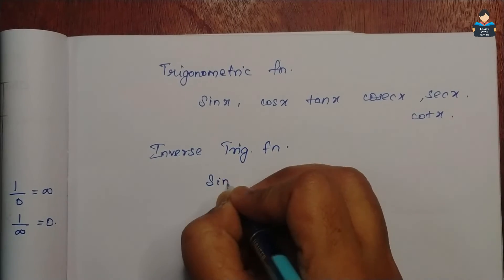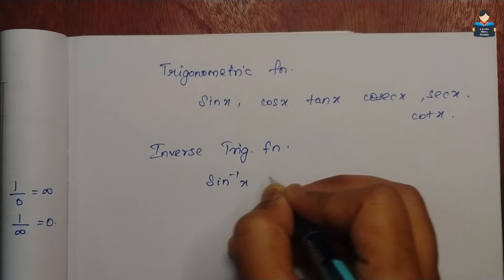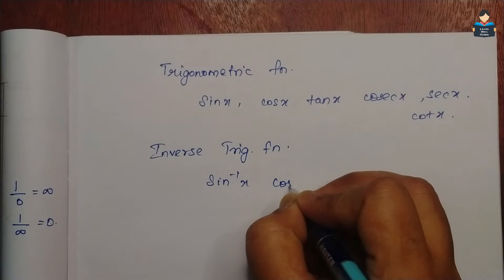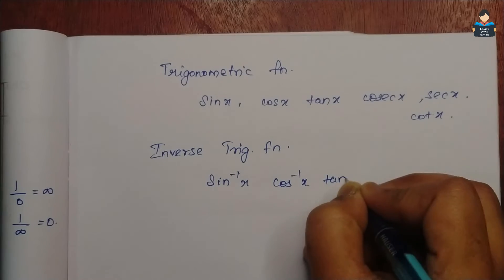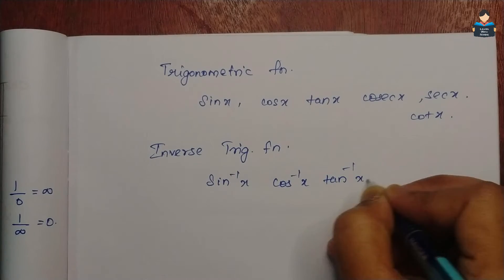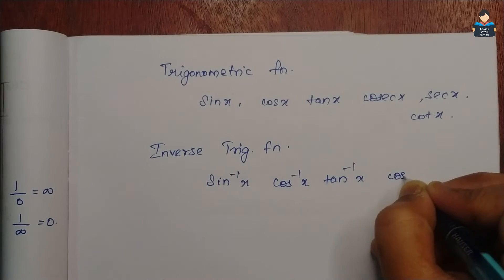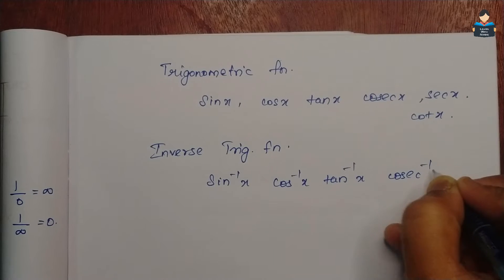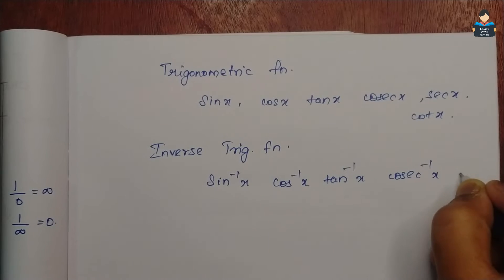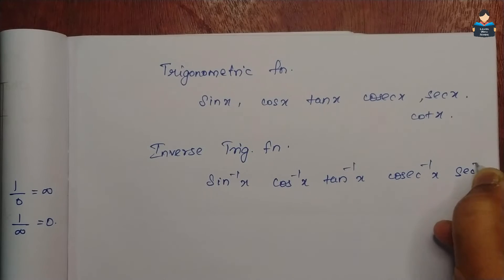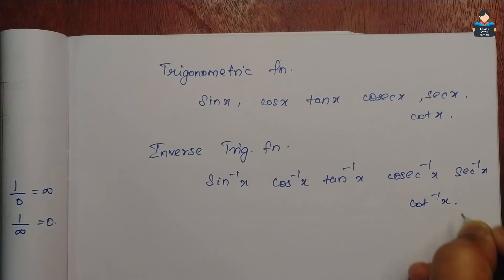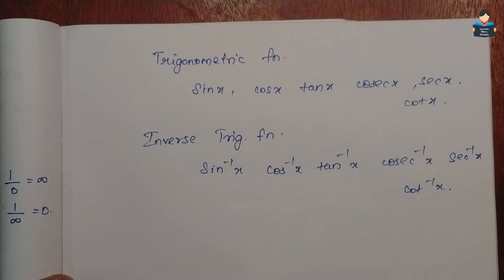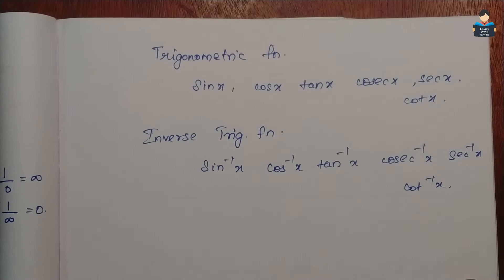The inverse trigonometric functions are: sin inverse of x, cos inverse of x, tan inverse of x, cosec inverse of x, secant inverse of x, and cot inverse of x.